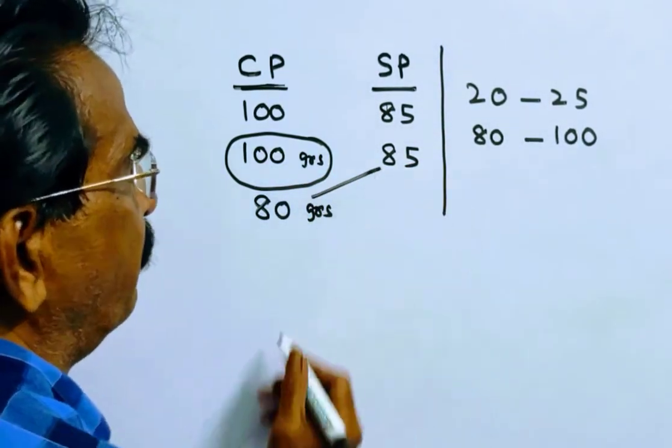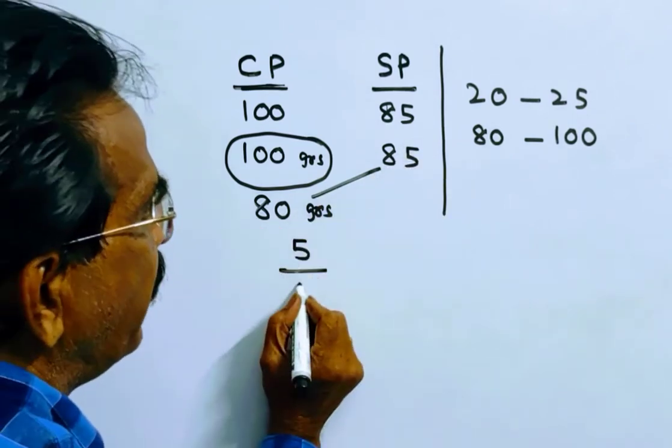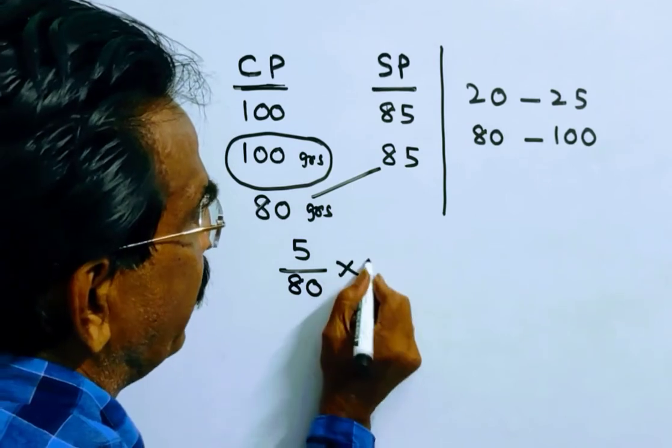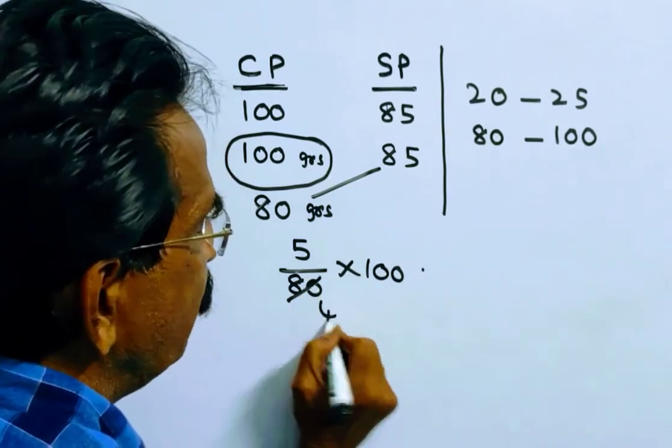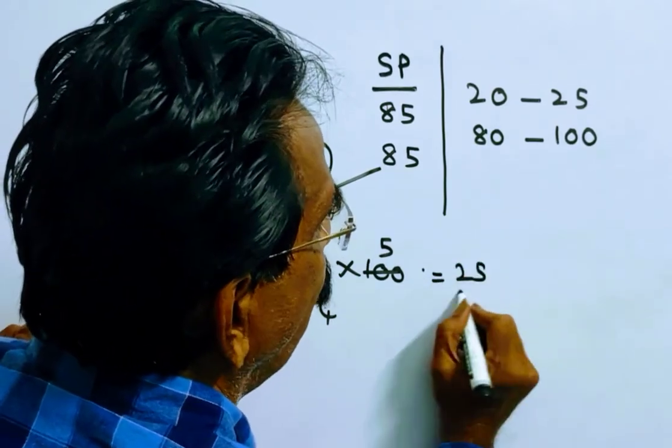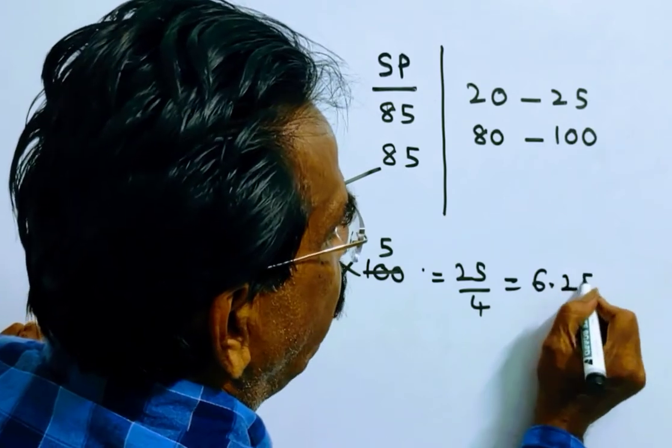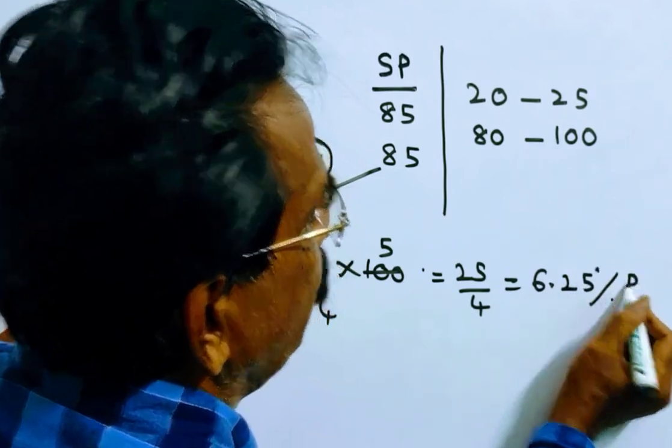Here profit is 5. Then profit percent is equal to profit by cost price into 100. 25 by 4. That is equal to 6.25% profit.